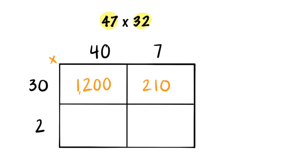Now, we can do 40 times 2. 4 times 2 is 8, and then we can add the zero from the 40. Now, we can multiply 7 times 2, which is 14. This time, we don't add any zeros because the 7 and the 2 don't have any zeros.